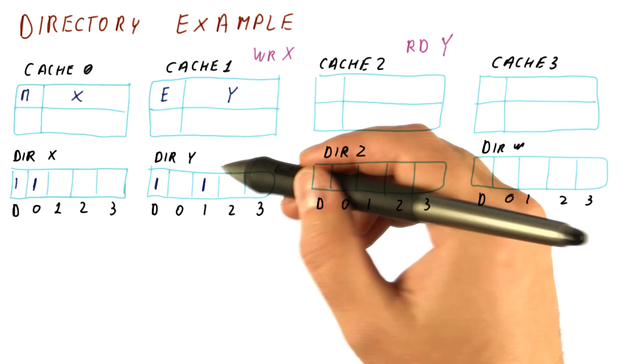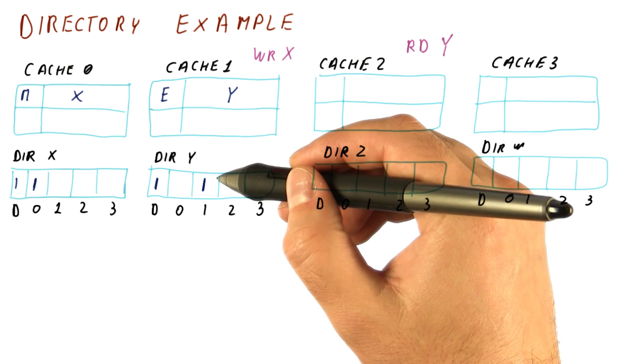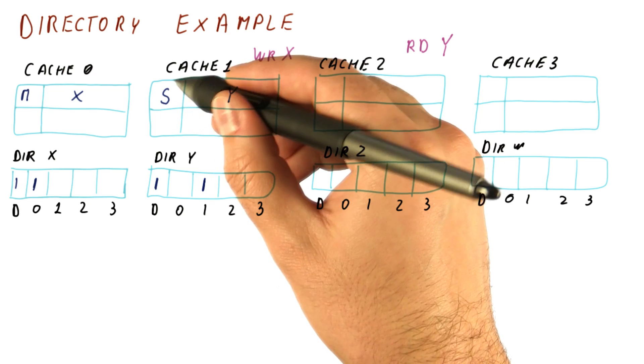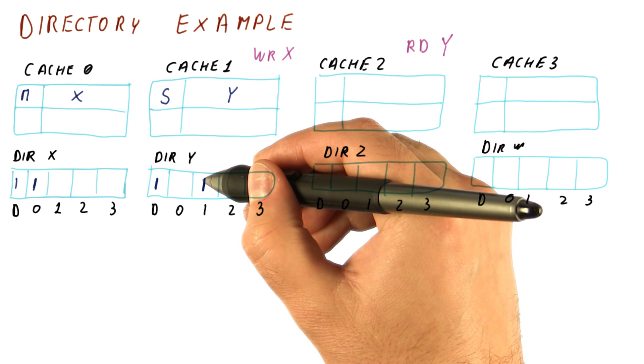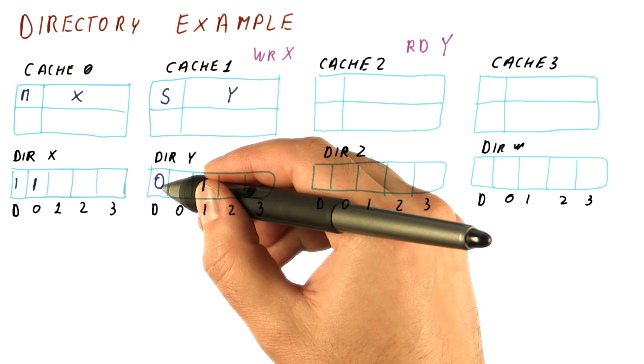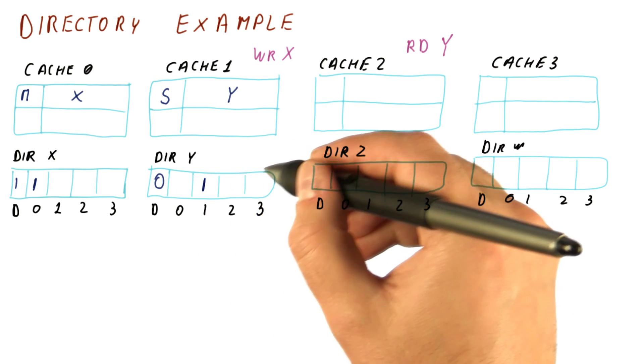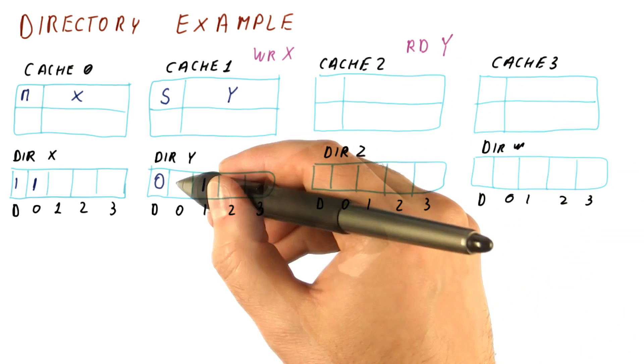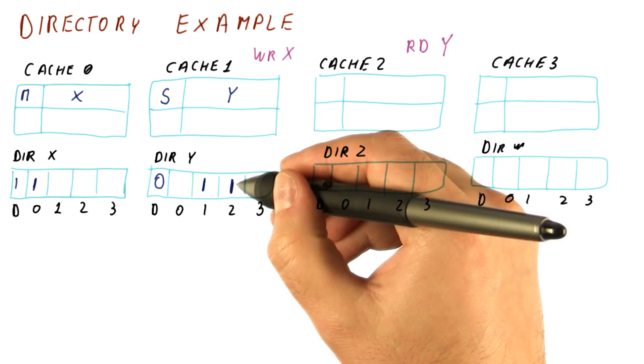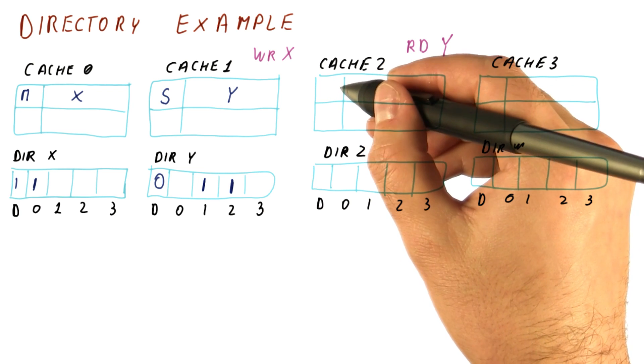So we forward the request to read to cache one. Cache one acknowledges that request, changes its state to shared. We get the response that doesn't carry data. So now we know that the block was not dirty and we change it to not dirty. We then get the data and forward it to cache two. And now we note also that cache two might have the data.